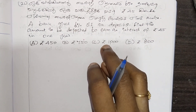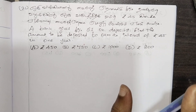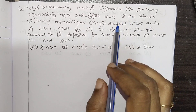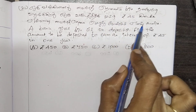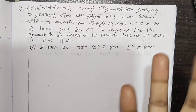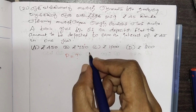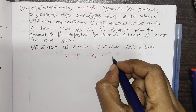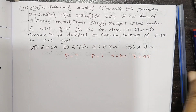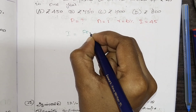We need to find the principal amount. Some values are given. We need to find the percentage — rate of interest — and the term. The formula for simple interest is: I = PNR / 100. Here, n is 1, r is 6. We need to solve for P.